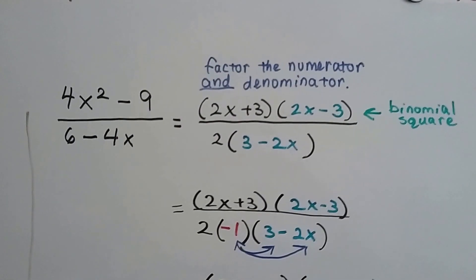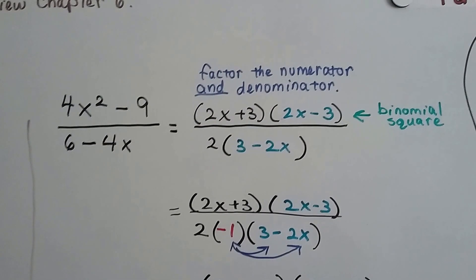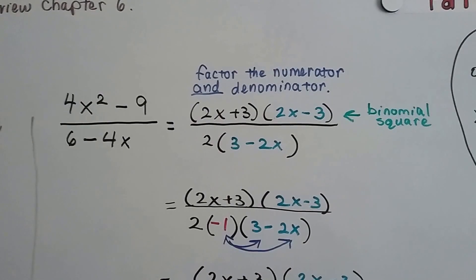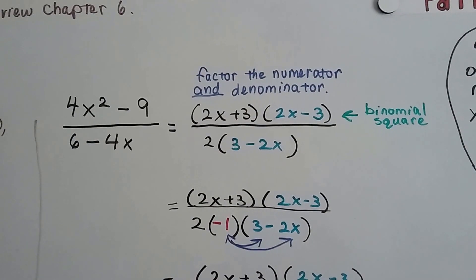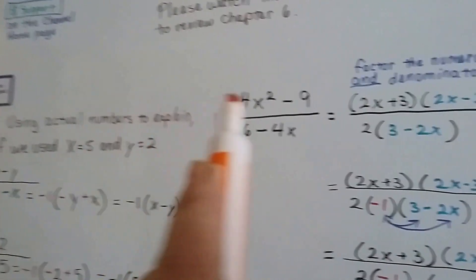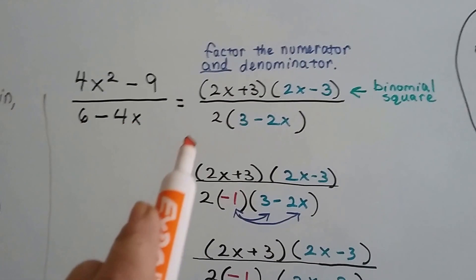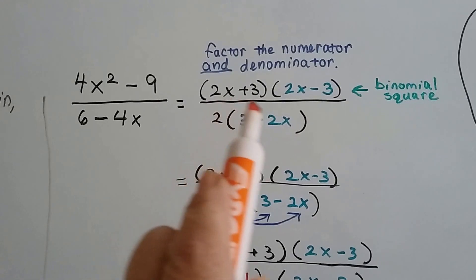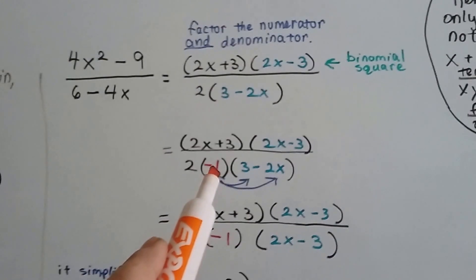Now look at this worked example. We've got a difference of squares: 4x squared minus 9, which we can factor as 2x plus 3 times 2x minus 3. If you forgot how to do difference of squares, there's a link in the description — come back to video 10.1c after reviewing. And the denominator 6 minus 4x can be factored as 2 times 3 minus 2x. So now we've factored the numerator and denominator, and now we can apply our negative 1.